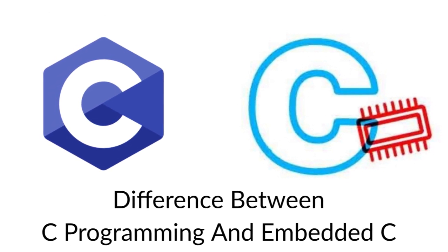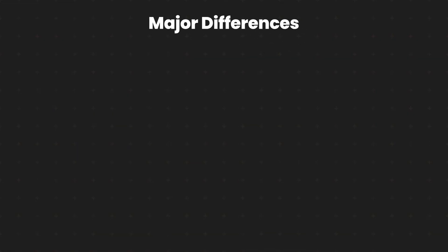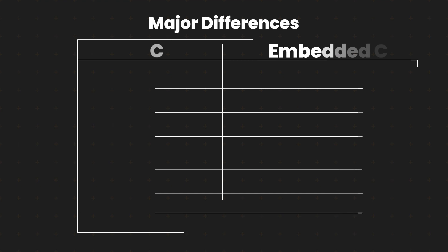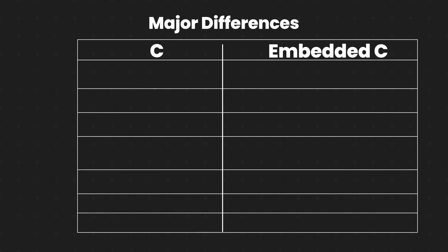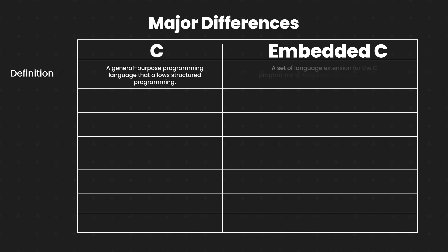So let's better understand the difference between C programming language and embedded C programming language using a tabular form. For the definition: C is a general purpose programming language that allows structured programs, while embedded C is a set of language extensions for the C programming language designed to address commonality issues that exist between C extensions for different embedded systems.